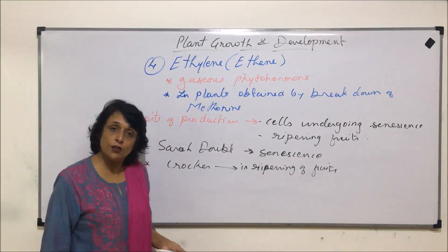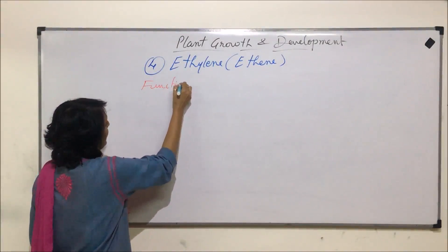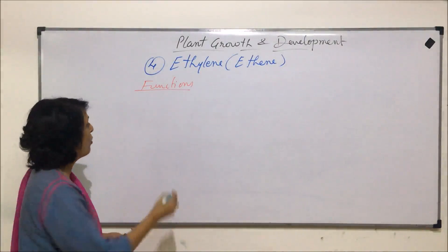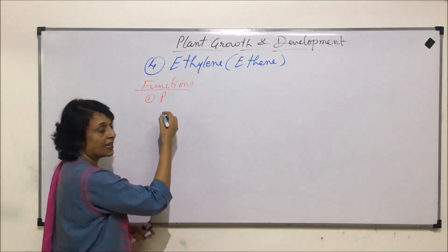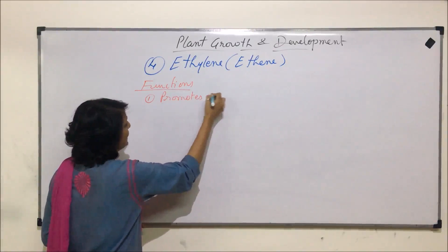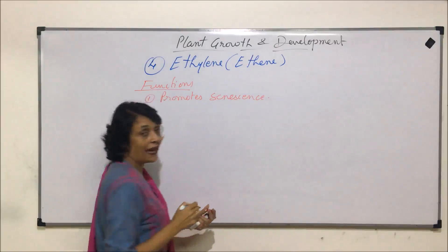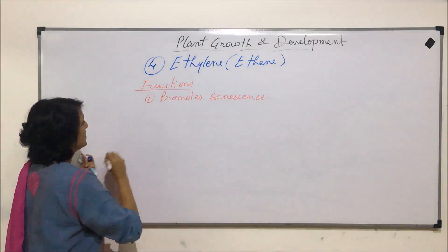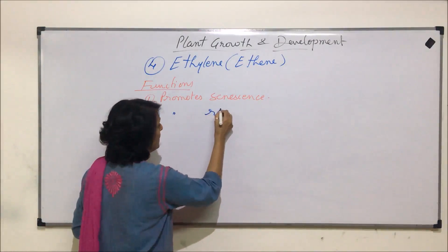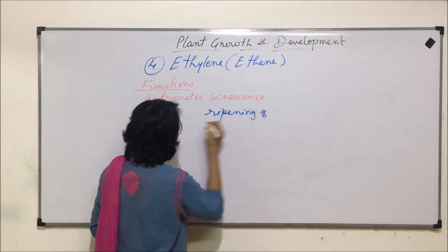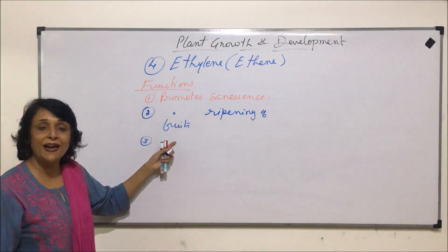Now let us come to the functions performed by ethylene. The most important function is that it promotes senescence, that is aging, in plants. The second important function is that it promotes the ripening of fruits. These are the two most important functions of ethylene.